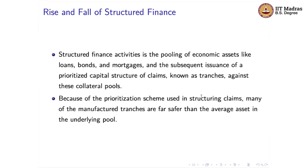What exactly do we mean by structured finance products? The idea is that you pool different assets — like loans, bonds, and mortgages (housing loans) — and by pooling these assets you create a new asset. The money generated from this asset is distributed back to different people according to a prioritized capital structure of claims. This means you establish who has the first right to claim the money, then after that person's claims are satisfied, a second person can claim, and so on. These prioritized claims are technically known as tranches.